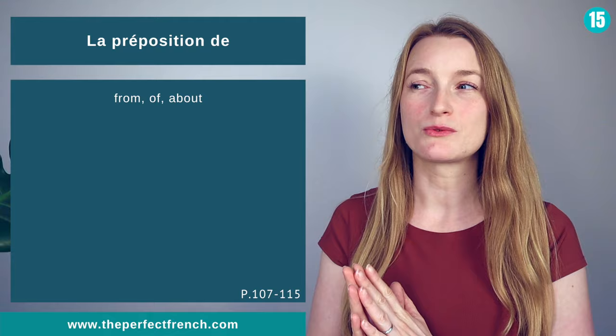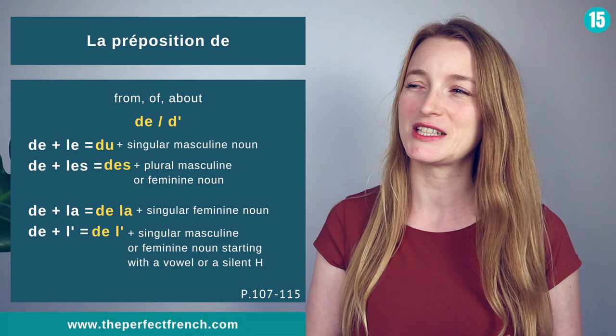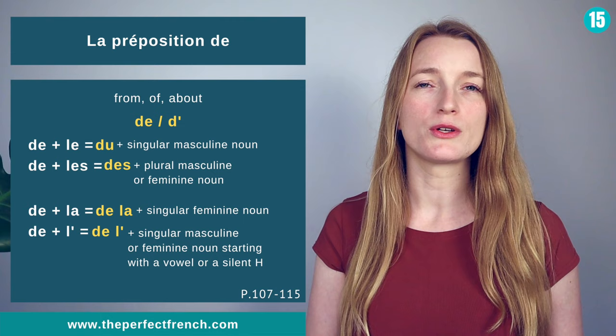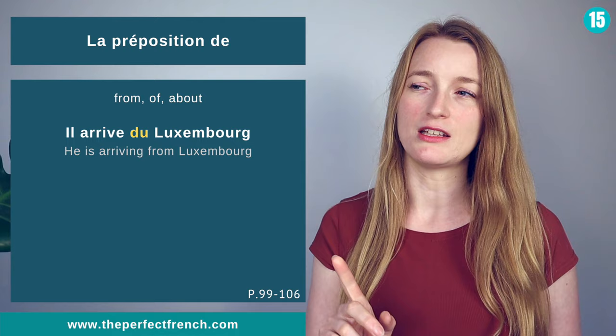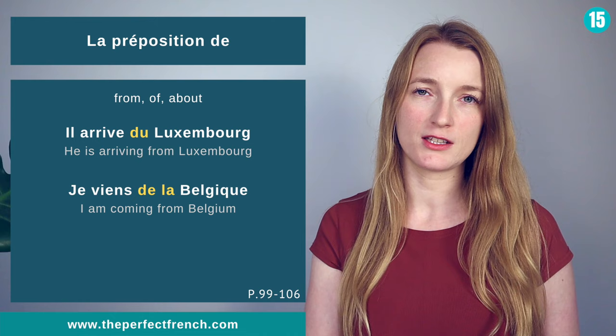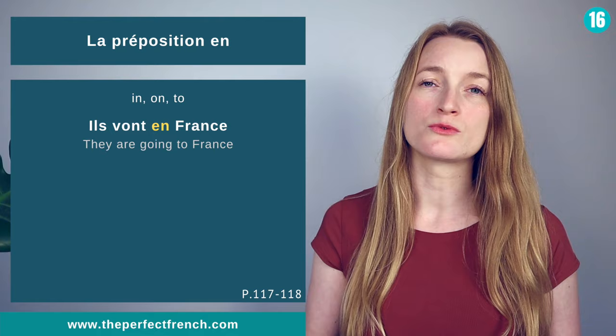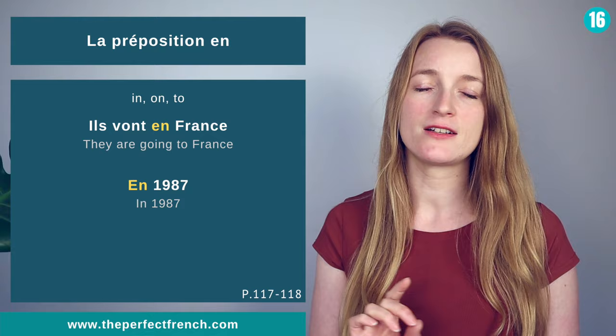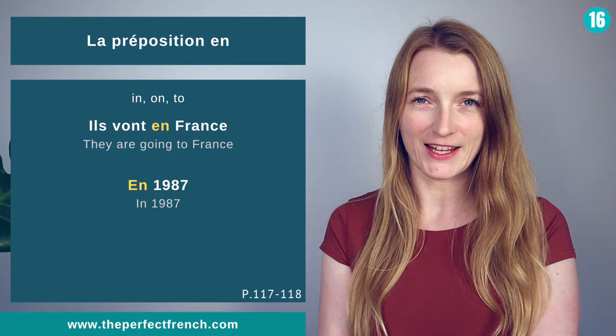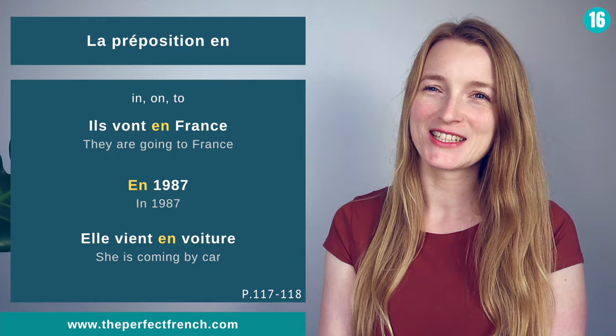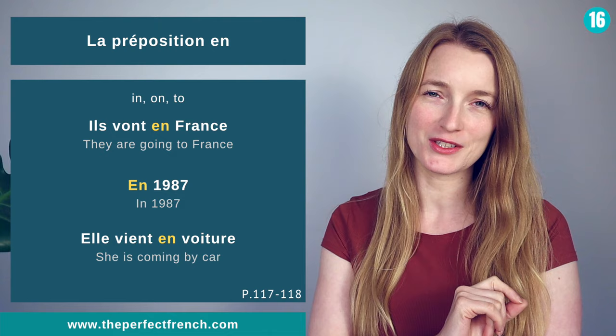Same for la préposition de — it can also have many different forms: du, des, de la, or de l'. Il arrive du Luxembourg. Je viens de la Belgique. The preposition en is going to stay en — it never changes. Ils vont en France. En 1987. Elle vient en voiture.